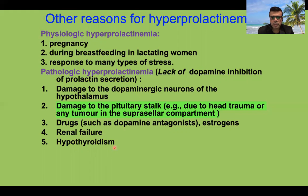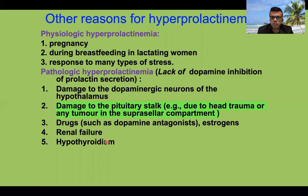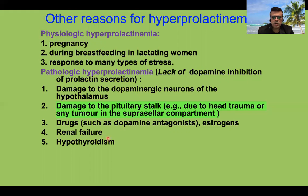To recap: prolactinomas are the most common cause of hyperprolactinemia and one of the most common hyperfunctioning pituitary tumors. They are composed of chromophobic or acidophilic cells in a monomorphic population, with positive immunostaining for prolactin, estrogen receptor alpha, and transcriptional factor Pit1. Prolactinomas also show dystrophic calcification and psammoma bodies.